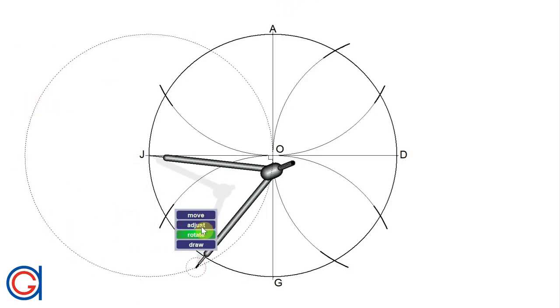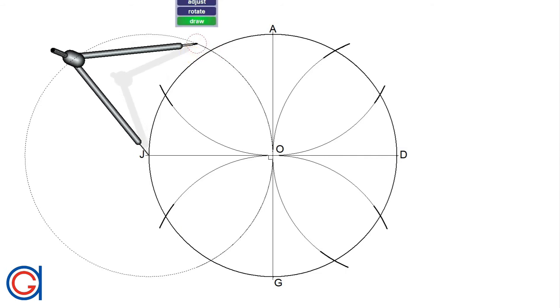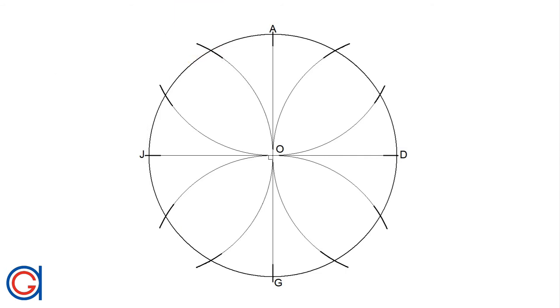So with these four arcs we obtain eight of the twelve divisions of our circle and the other four are the extremities of the diameters.